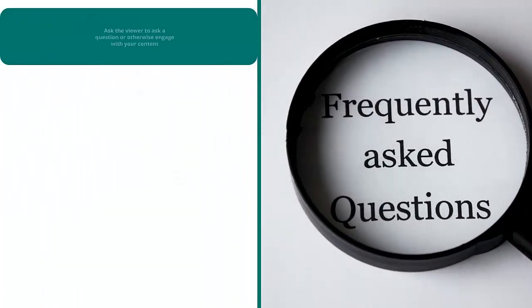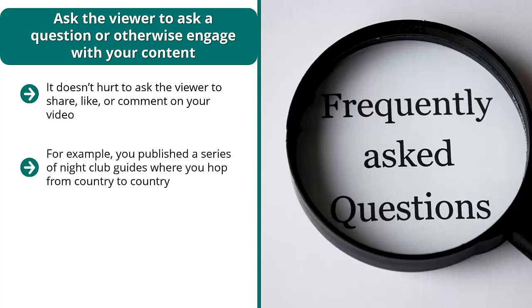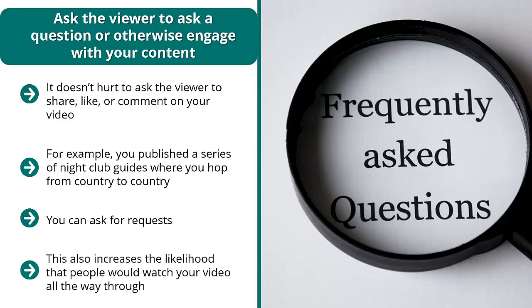Ask the viewer to ask a question or otherwise engage with your content. It doesn't hurt to ask the viewer to share, like, or comment on your video. One of the easiest ways to do this is to ask the viewer a question. For example, if you've published a series of nightclub guides hopping from country to country, at the end of your latest video you can ask: which nightclub, which city, and which country would you want me to go to next? You can ask for requests, comments, and feedback. When people engage with your content, YouTube tends to rank your video higher because engagement indicates that people are actually paying attention. This also increases the likelihood that people watch your video all the way through, and viewing duration plays a big role in how well your video ranks.